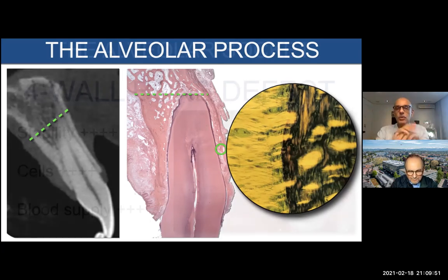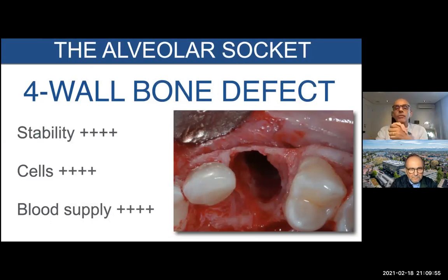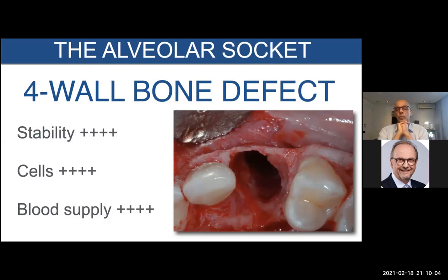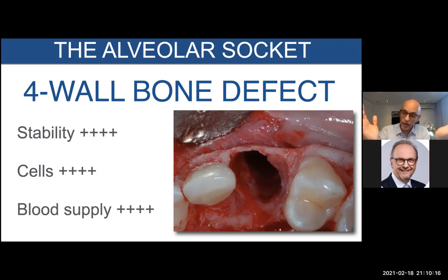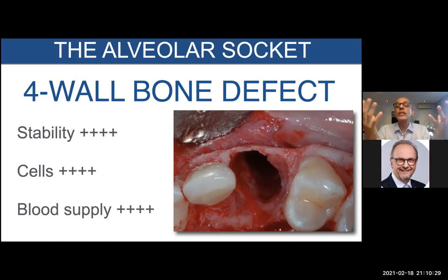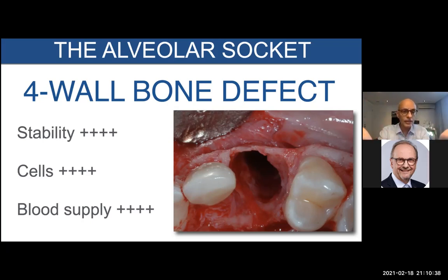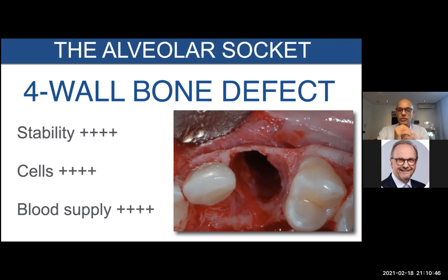I have defined what the alveolar process is and described its components. Now let's take a look at the alveolar process without the tooth. When I look at the socket inside the alveolar process, this is a bone defect — and a very nice bone defect. It's a four-wall bone defect: mesial, distal, buccal, and palatal or lingual bone walls. So I have perfect stability for my blood clot, which is protected by all these walls.